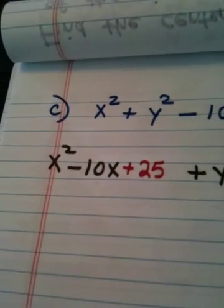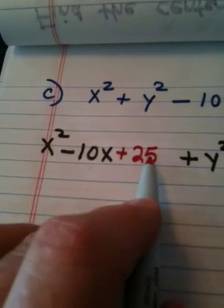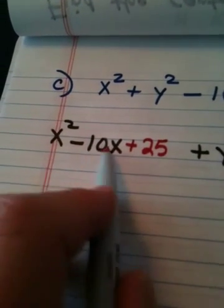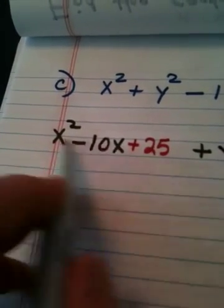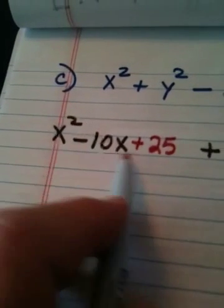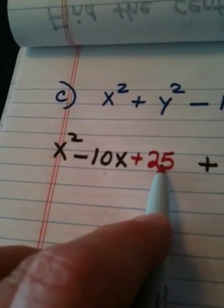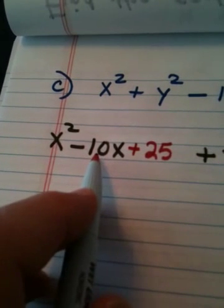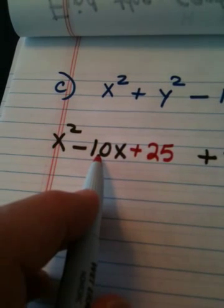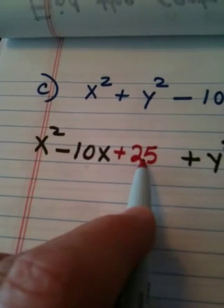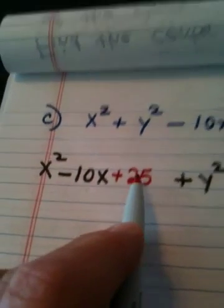Now, this process is called completing the square because it wants me to turn this expression into a perfect square. And you'll see why in a minute. How did I get the 25? Let me take you through it again. Half of negative 10 is negative 5. Square it and you get 25. What you add to one side, you add to the other side.